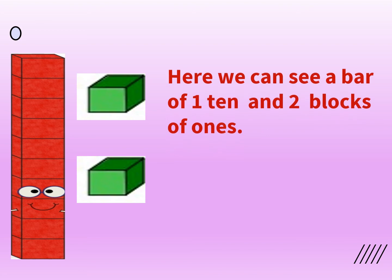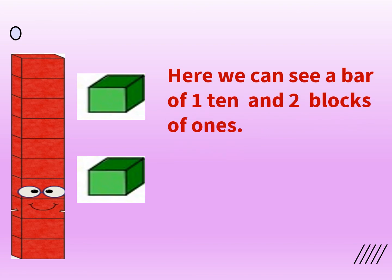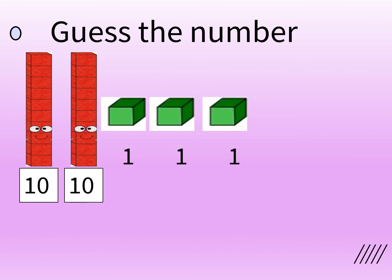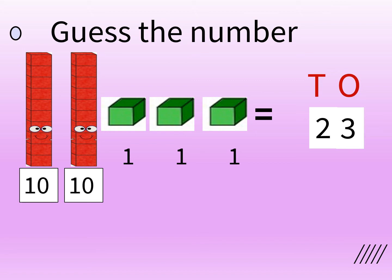Here we can see a bar of 10 and 2 blocks of 1s. That means 1 ten and 2 ones make 12. Now let's try to guess the number on the screen. There are 2 bars of 10s and 3 blocks of 1s. Since there are 2 tens, let's write the number 2 at the tens place. And since there are 3 ones, let's write the number 3 at the ones place. So 2 tens and 3 ones make the number 23.